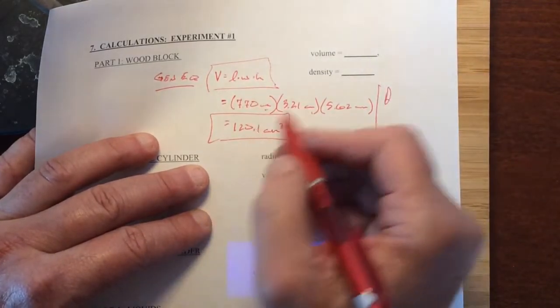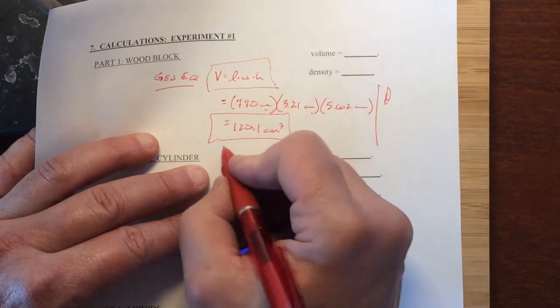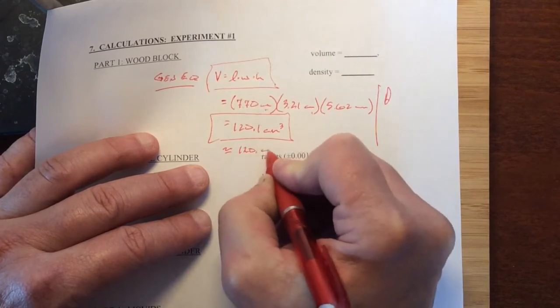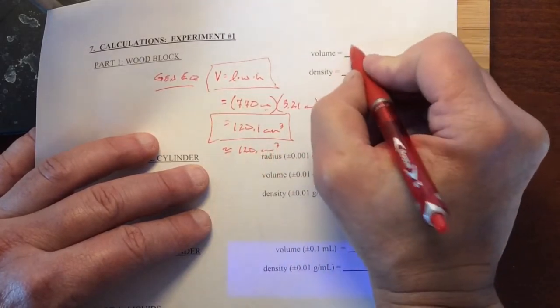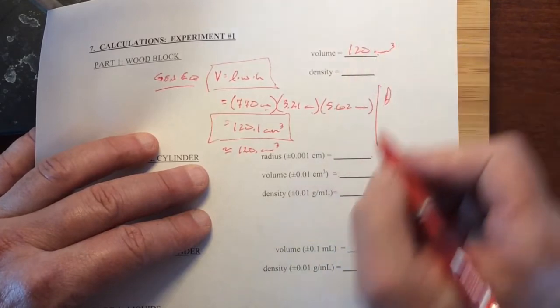And then the last step here is sig figs. If here I have 3 sig figs allowed, then I really should round this or should have rounded it to 3 sig figs here. So in my case, it was my 120. So up here, 120 centimeters cubed.